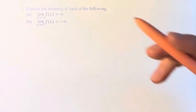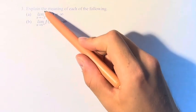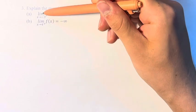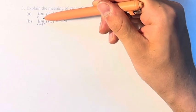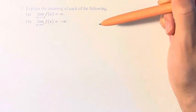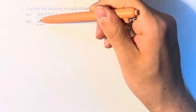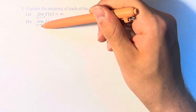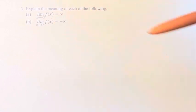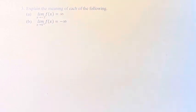Hello, and welcome back to another video. In this problem, we're asked to explain the meaning of each of the following. We have the limit as x approaches negative 3 of f of x is equal to infinity, and the limit as x approaches 4 from the right of f of x is equal to negative infinity.